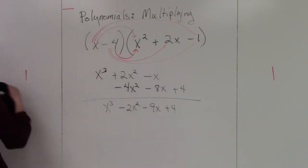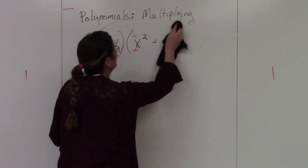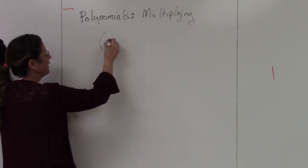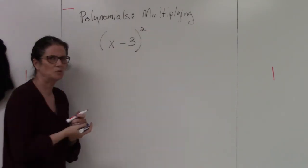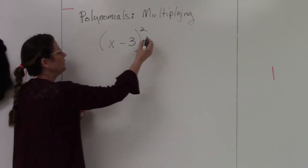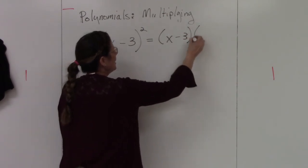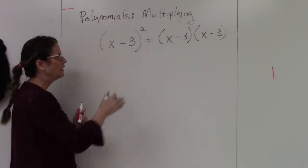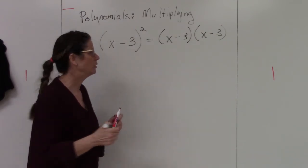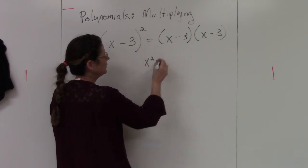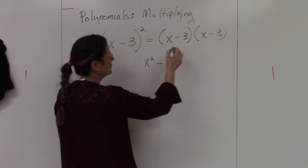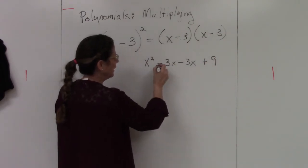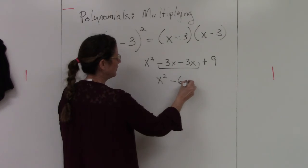There are a couple of specialty cases I want to show you. Squaring a binomial — if I have x minus 3 and the whole thing squared, this is a binomial squared. What this actually means is x minus 3 times x minus 3, because the exponent says to take the base and repeat the multiplication. So x times x is x squared, x times negative 3 is negative 3x, negative 3 times x is negative 3x, and negative 3 times negative 3 is 9. Adding like terms gives x squared minus 6x plus 9.